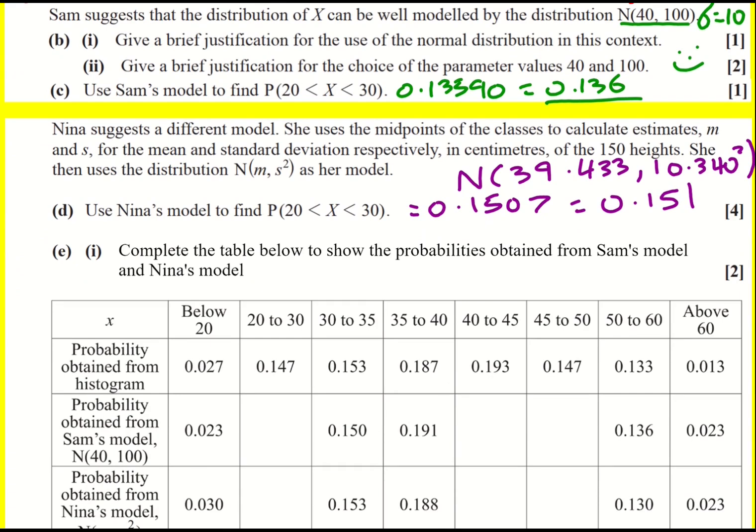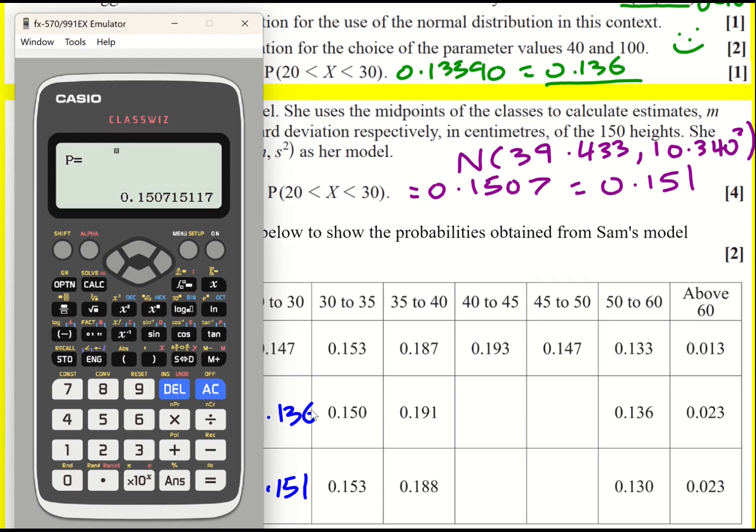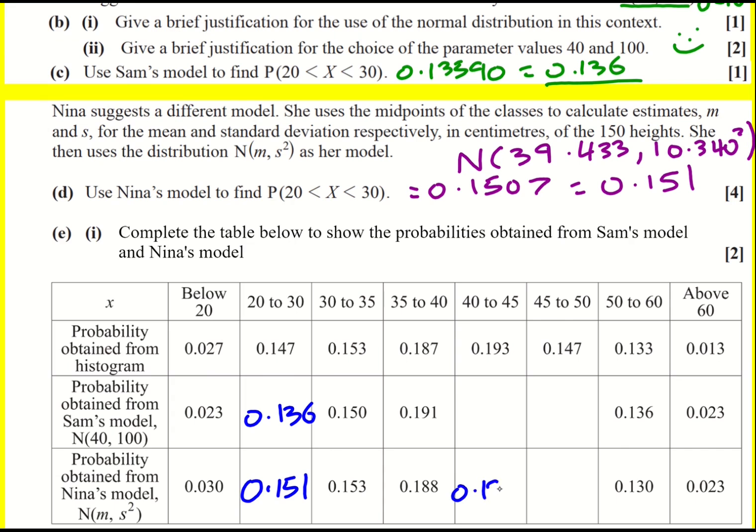We're now asked to complete the table. So we've already got, remember, Sam's model is the original one. And Nina's model is this new one. We've got 0.151. We just found that one. And from above, we had 0.136. So those two are sorted. And you just have to use your calculator to get the rest of them. I'm just going to do one more. Nina's model is going to be quite quick, because I've already got all the parameters in. So 40 and 45, which gives us 0.183. So if you do that for 45 to 50 as well, you should get 0.142. And you have to change the parameters and go back to Sam's model. And we get 0.191 and 0.150.